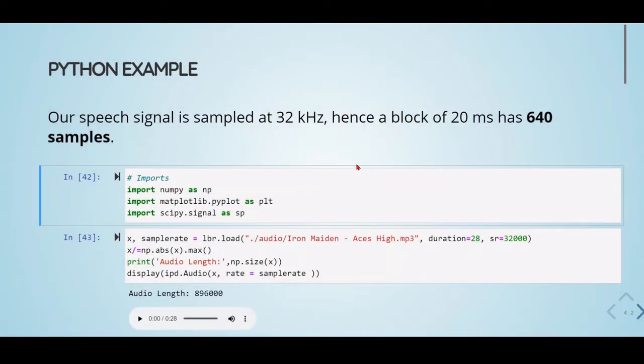Here is our Python example for the LPC. Our speech signal will be sampled at 32 kHz, hence a block of 20 ms has 640 samples.